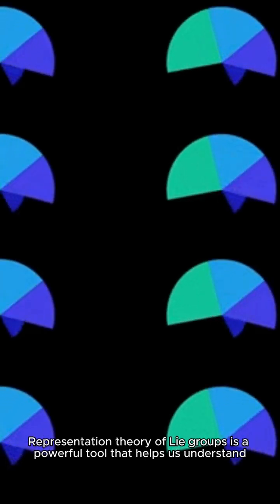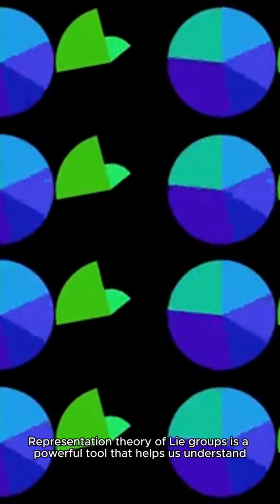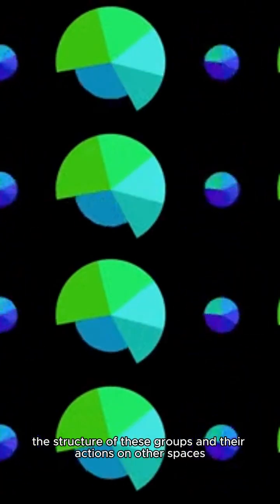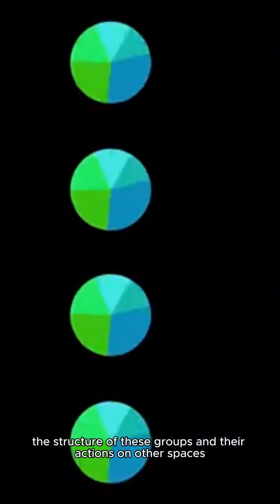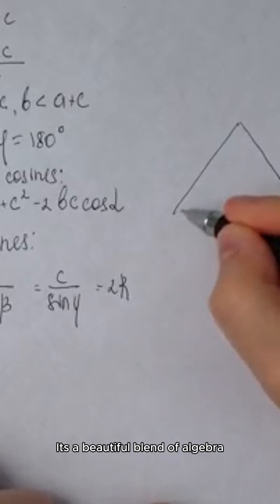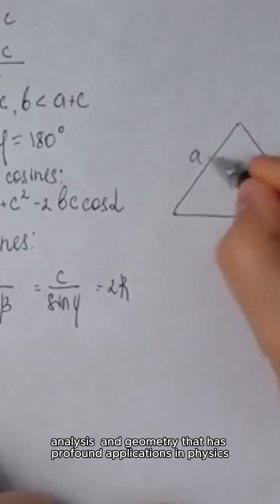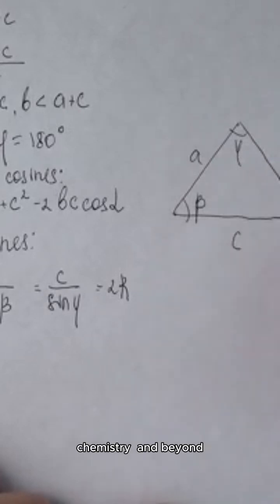Representation theory of Lie groups is a powerful tool that helps us understand the structure of these groups and their actions on other spaces. It's a beautiful blend of algebra, analysis, and geometry that has profound applications in physics, chemistry, and beyond.